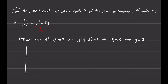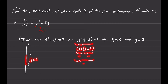Now we have two critical points which divide the y-axis into three regions. The first region is between 0 and 3, and we can pick a value of 1. We find that f(1): 1 is positive, 1 minus 3 is negative, so f(1) will have a negative sign. Since it's negative, it's decreasing, so we put a downward arrow between 0 and 3.